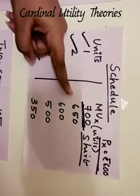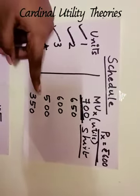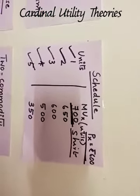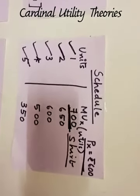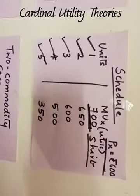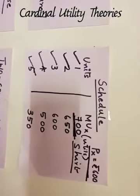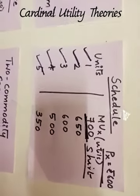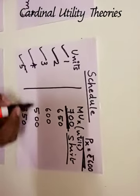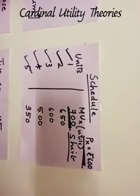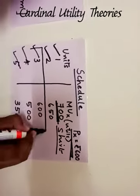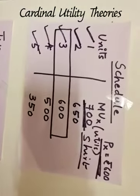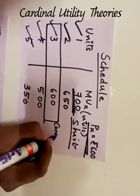First shirt he got 700 utils, then 650, 600, 500, 350 utils. Now, the price of the shirt is Rs. 600. Come back to the schedule and find where is the unit of the shirt which satisfies the condition MU of X equal to P of X. P of X is 600, so find where MU of X comes to 600 — that is the third unit. So when he purchases the third unit of shirt, that is with the third month's salary, he will be at maximum utilization. This is consumer's equilibrium.